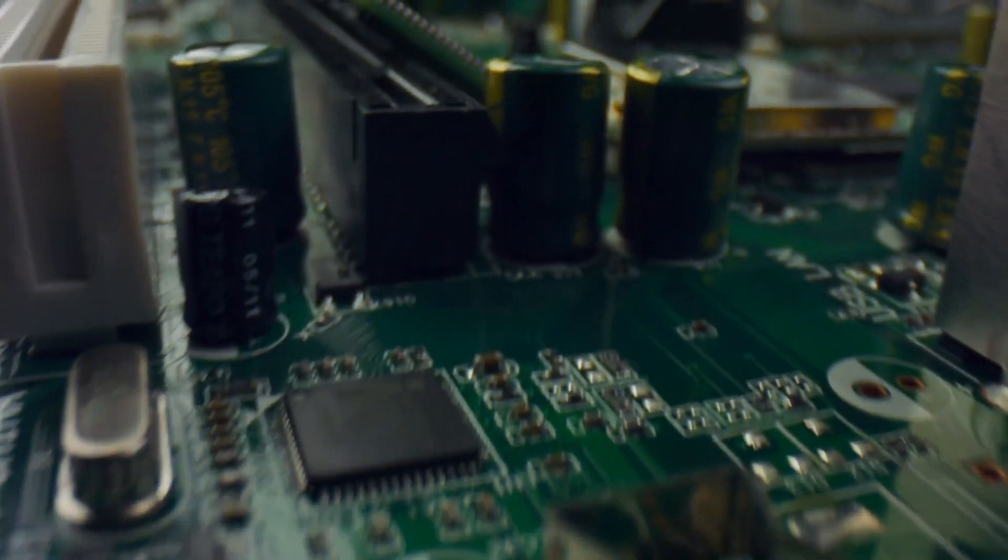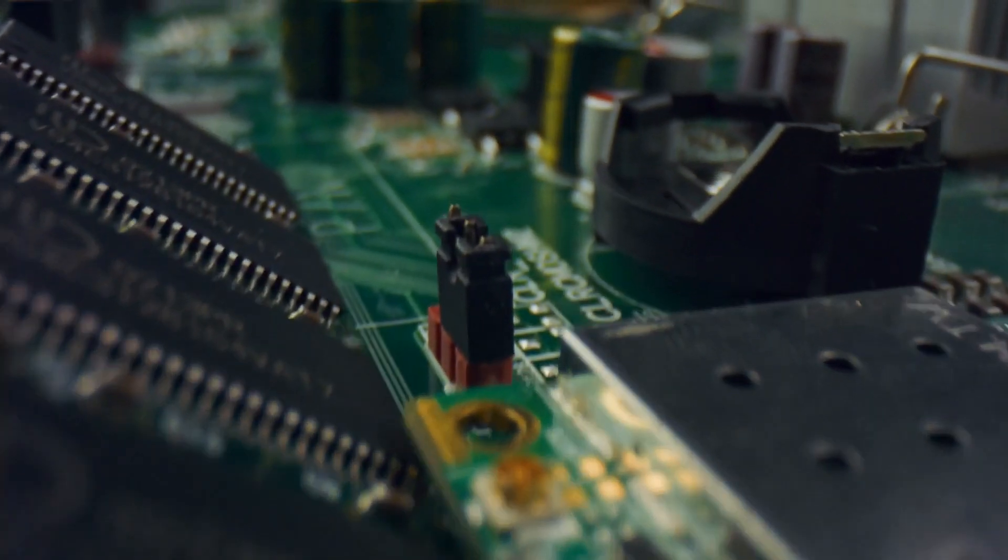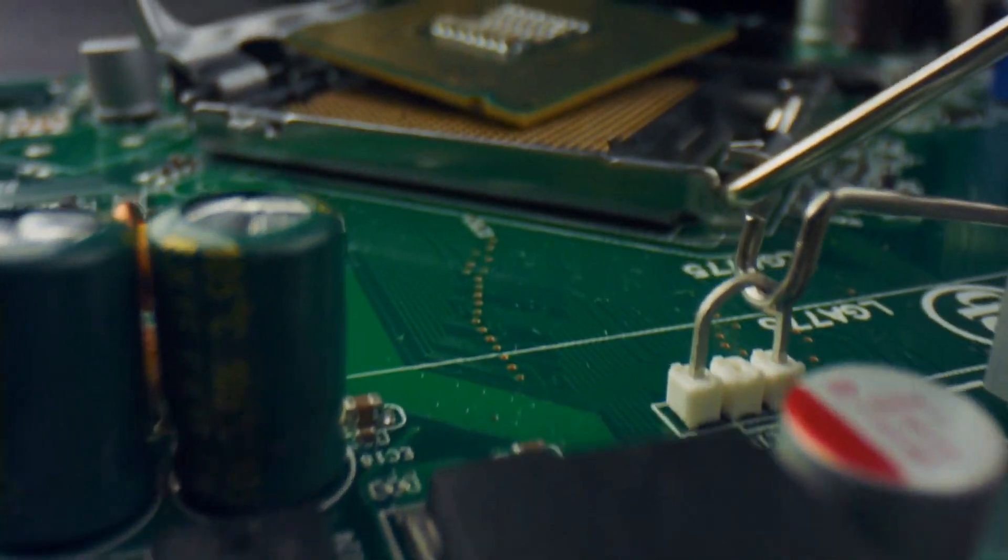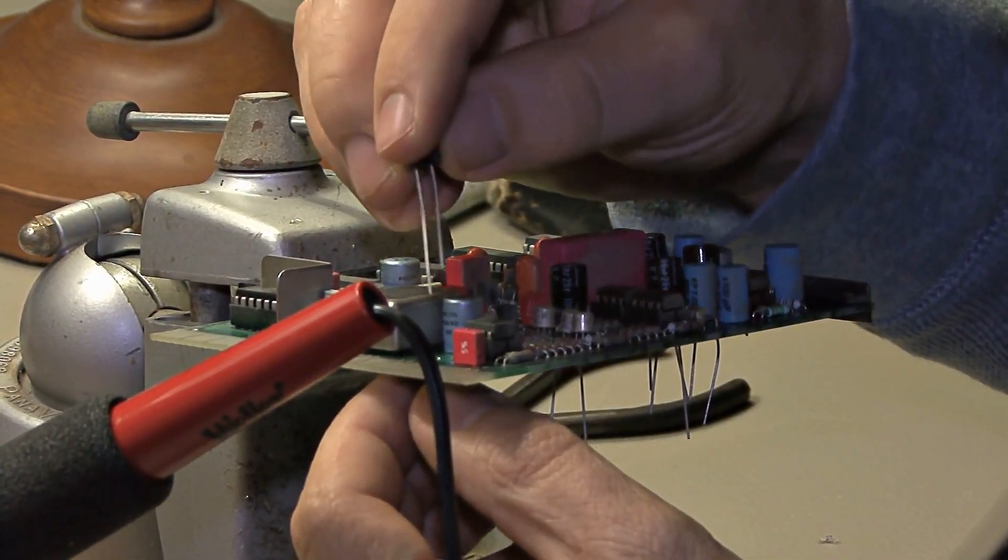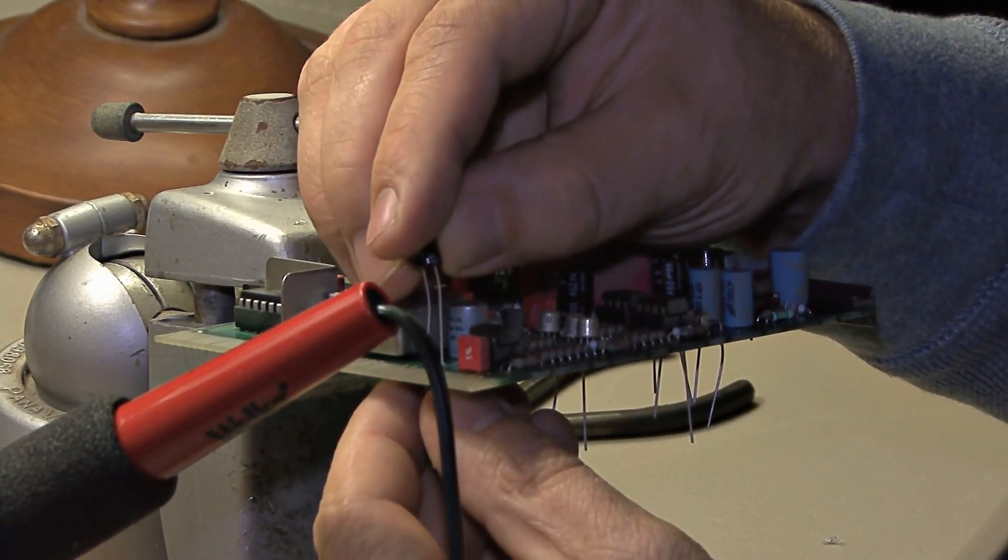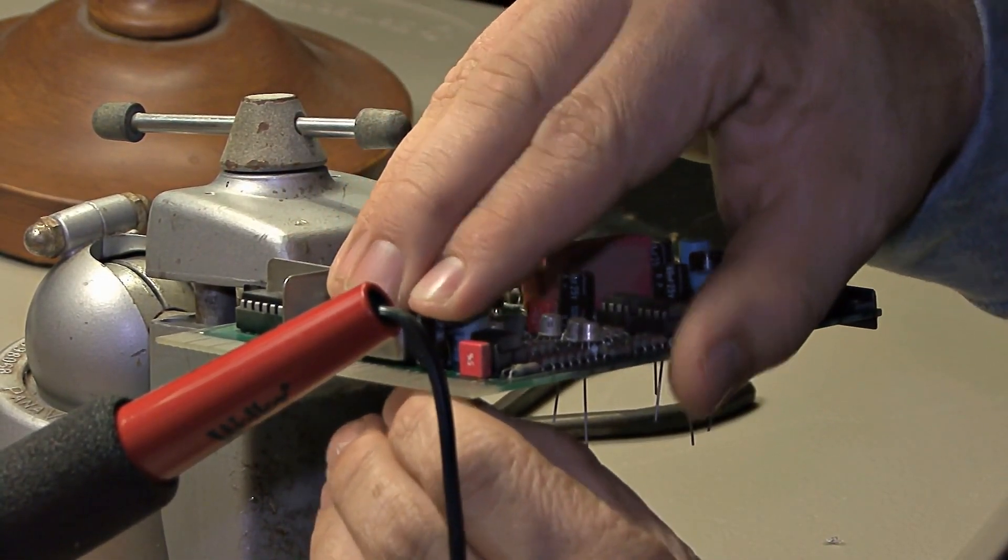The feature of a capacitor to store energy on its plates by the form of electrostatic field is called capacitance of the capacitor. Capacitance is also a feature of a capacitor that resists any change in its voltage.